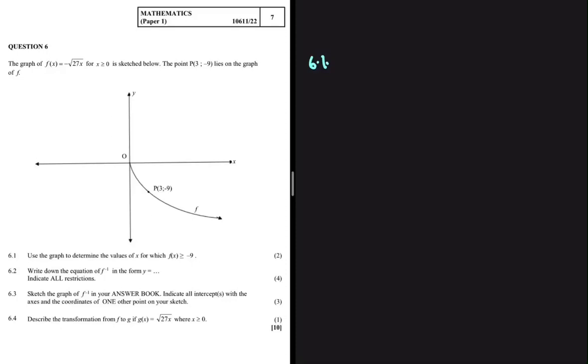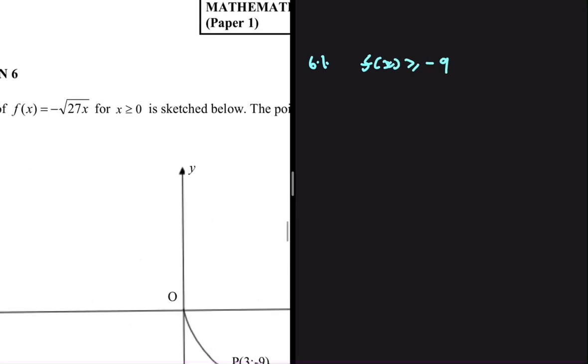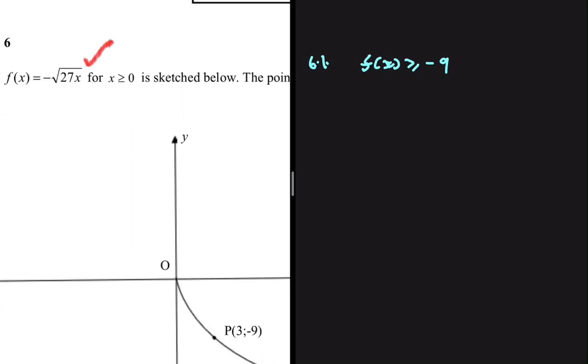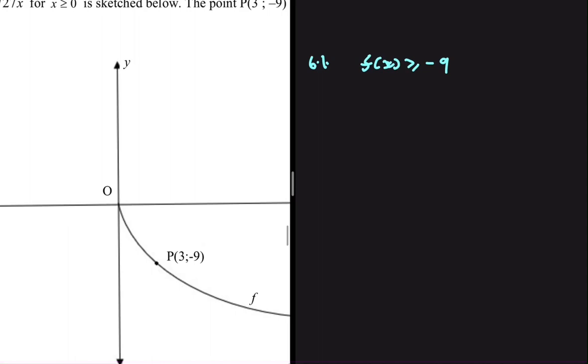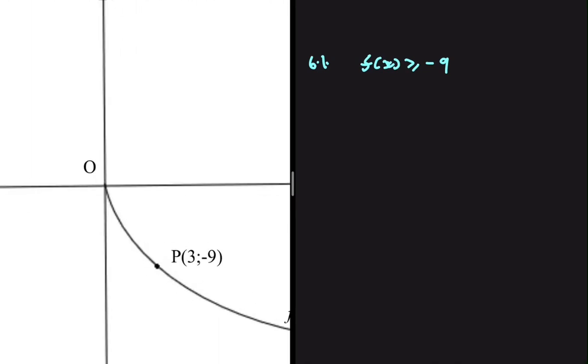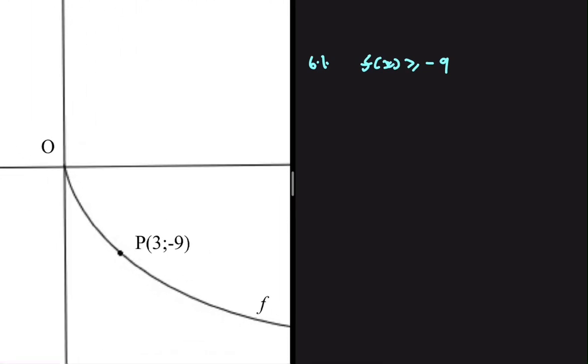Use the graph to determine the values of x for which f of x is greater or equals to minus 9. f of x is equals to minus square root of 27x. Let's go to the graph and look for values of x for which f of x is greater or equals to minus 9.